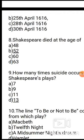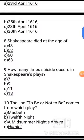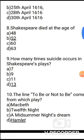Question 9: How many times does suicide occur in Shakespeare's plays? Options: A. 7, B. 9, C. 11, D. 13. The correct answer is option D, 13.